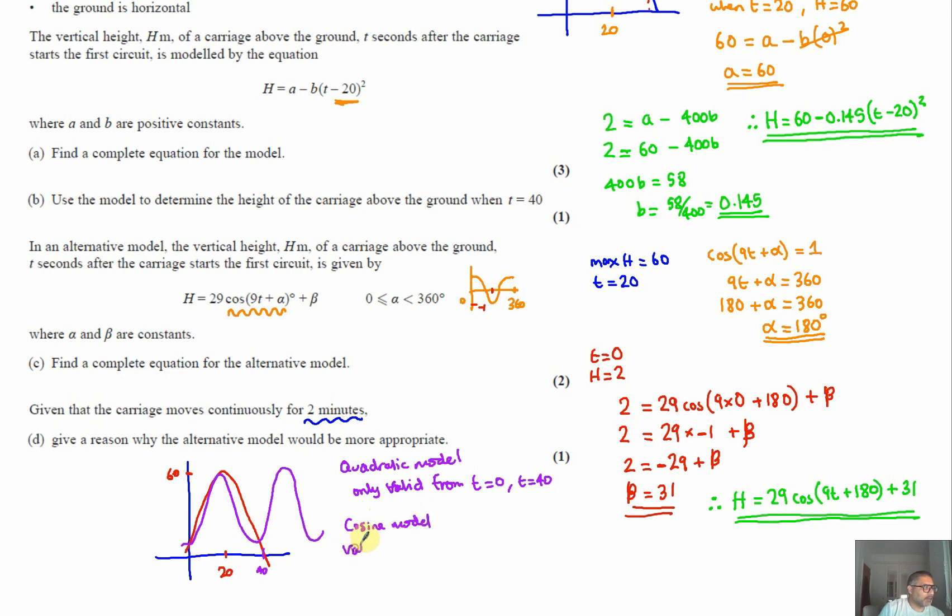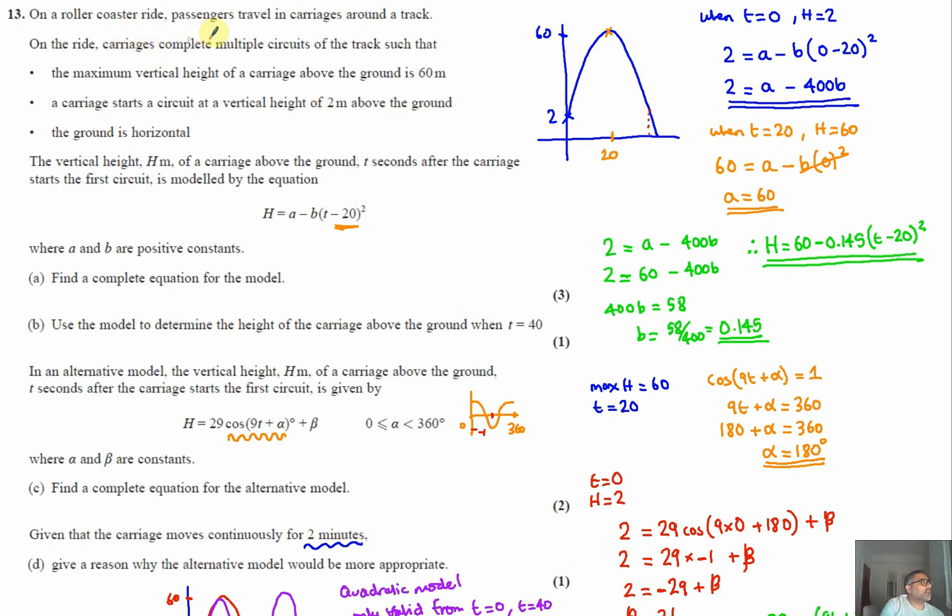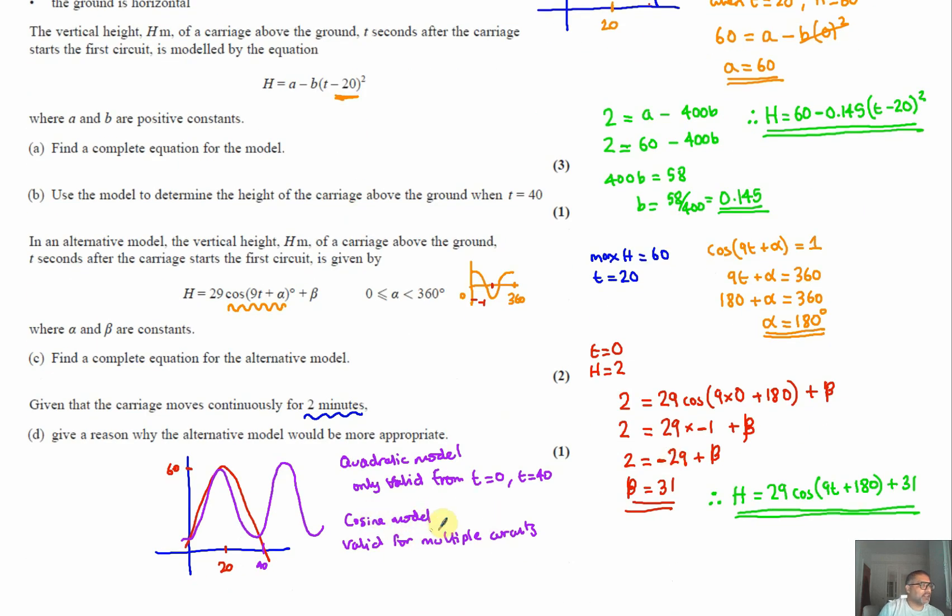And it said in the question, if I believe correctly, it said that carriages complete multiple circuits of the track. So therefore we can see that's why therefore the cosine model is more appropriate.